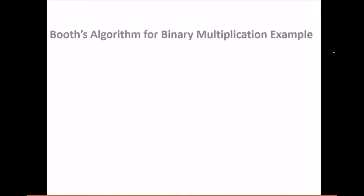Let us see Booth's algorithm for binary multiplication with an example. Booth's algorithm is employed for multiplication of binary, or signed binary, numbers. It was specially built by Booth since it decreases the complexity of actual multiplication — if only shifts are used, it is less complex than using additions and subtractions.